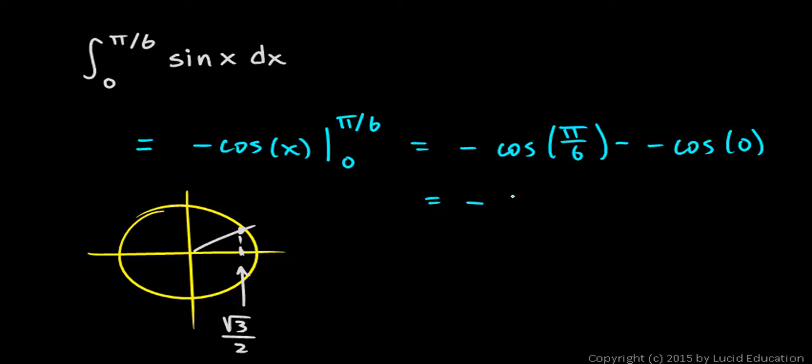So over here I have this negative out front, cos(π/6) is √3/2, then I have minus negative, which is a positive, cos(0). And cos(0), of course, right there is just 1. So negative √3/2 plus 1.